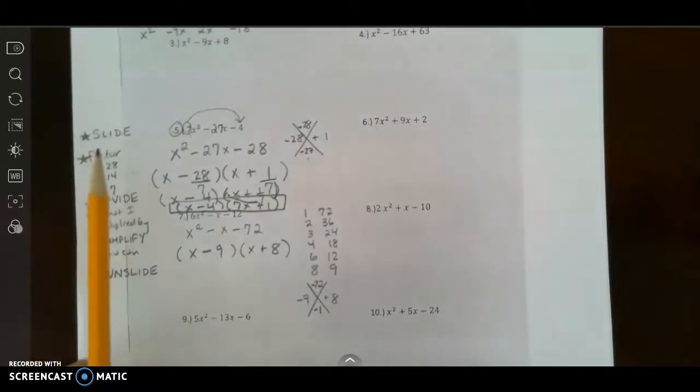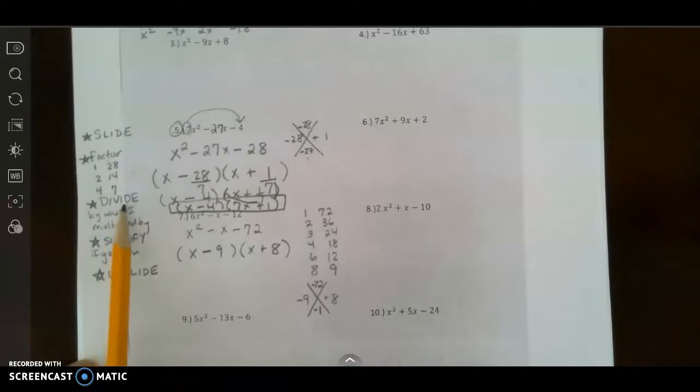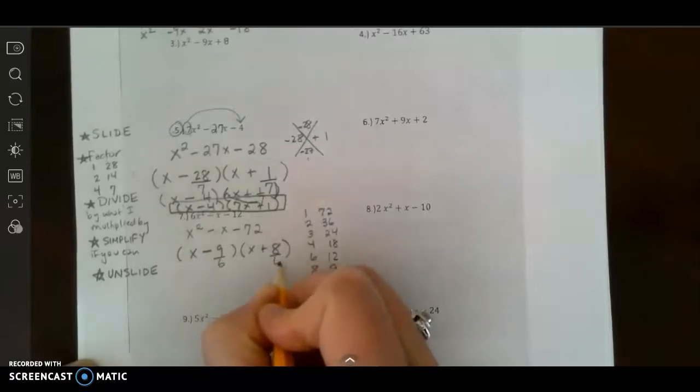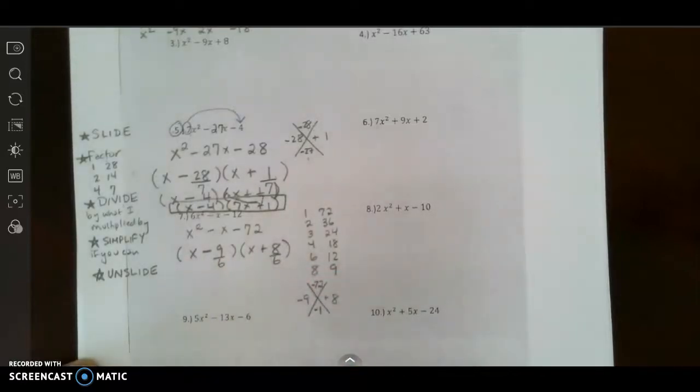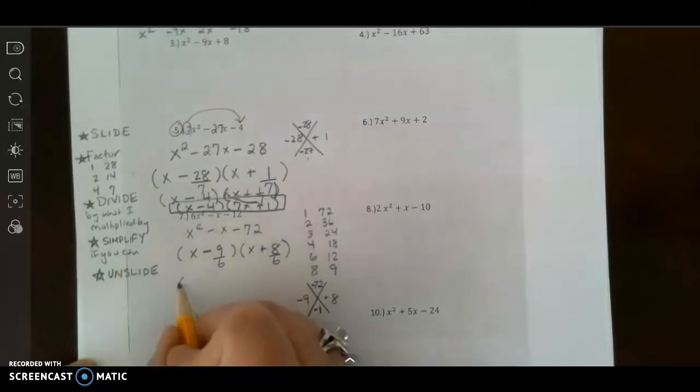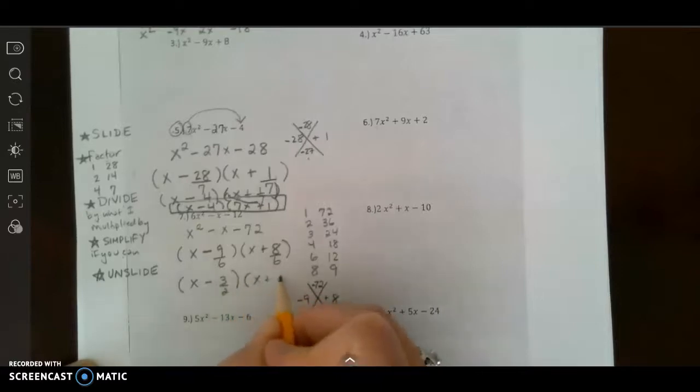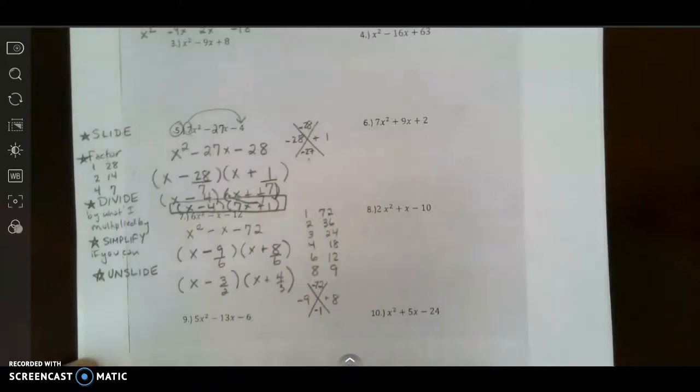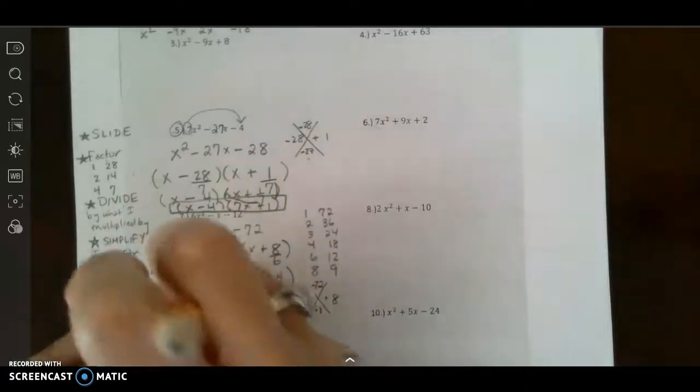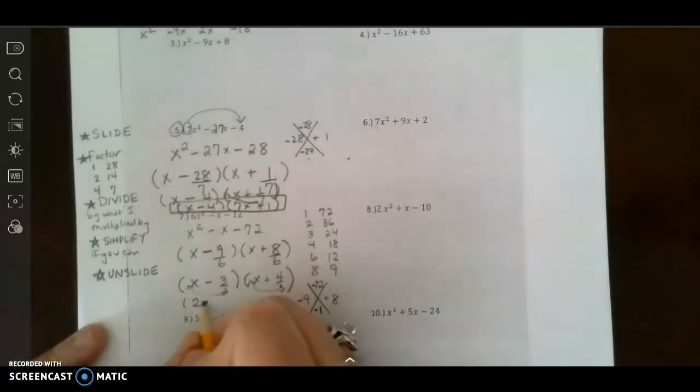So that was my slide, and then I factored. Now I have to divide by what I multiplied by. I multiplied by 6, so I have to divide by 6. Then I have to simplify. And then I have to simplify the fractions. This becomes 2x minus 3 and this becomes 3x plus 4.